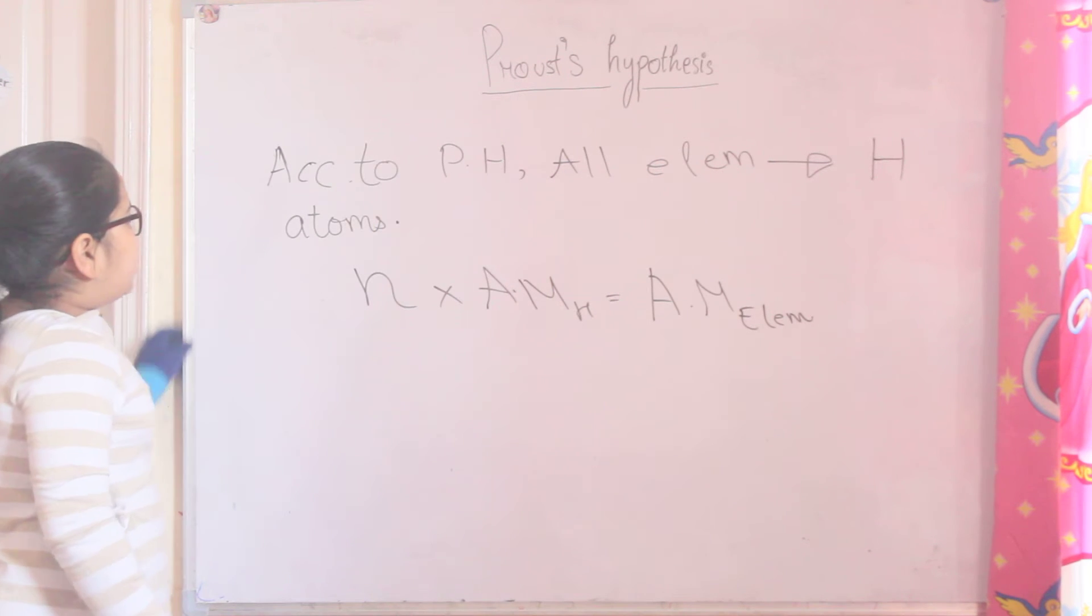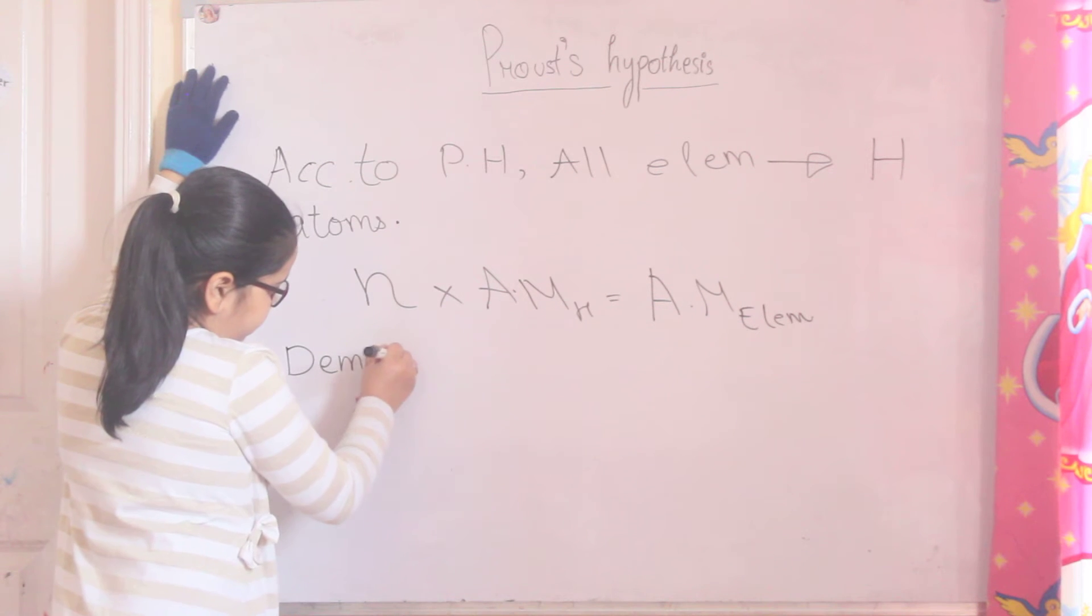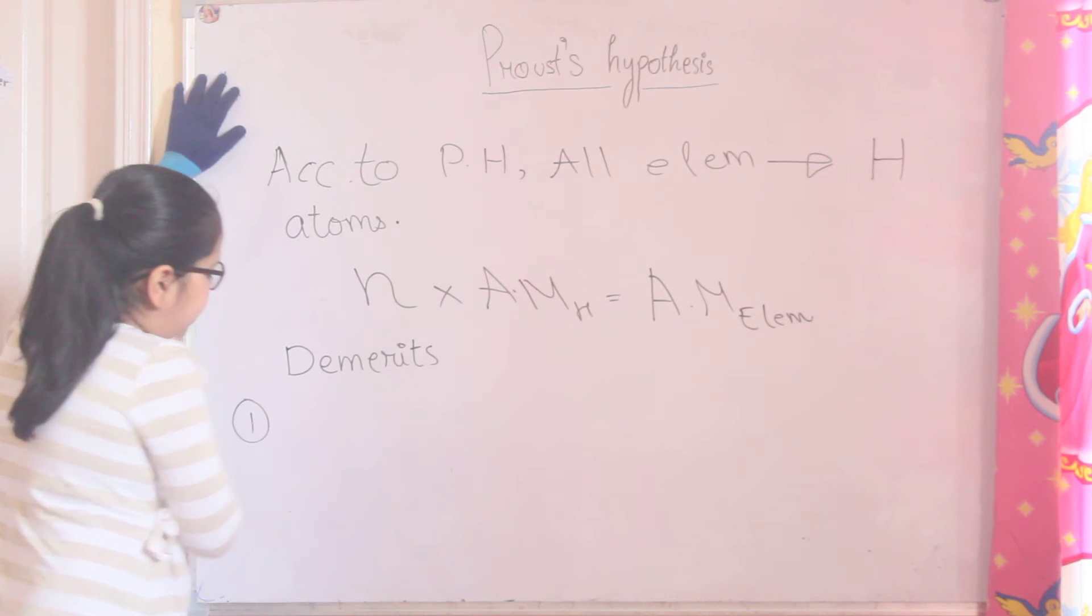Now Proust's Hypothesis has demerits. I know that everything has some demerit. So the first demerit is this.